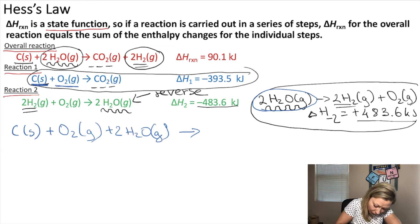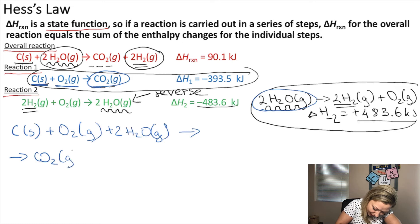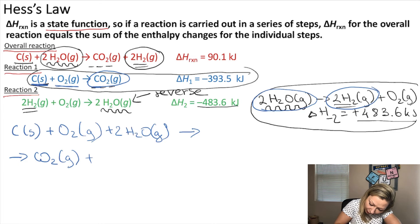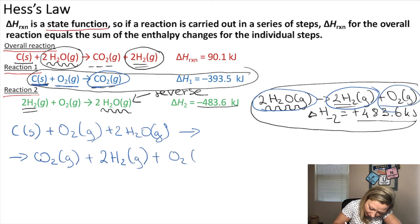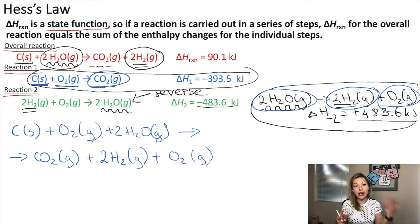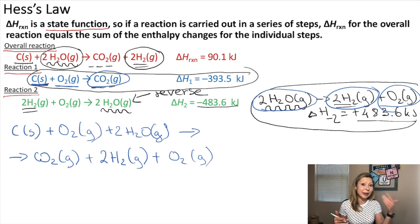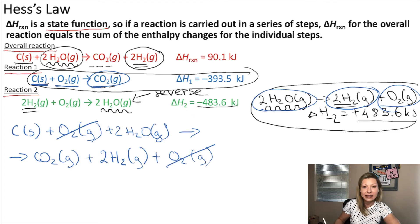Now I look at my products: CO₂ gas from reaction one, plus H₂ gas — two moles of that — and O₂ gas from the reversed reaction two. Now, we have O₂ gas on both the reactant and the product side in the same amount. Because it's there at the beginning and at the end of the reaction, nothing happened to it — I can simply cancel it out.